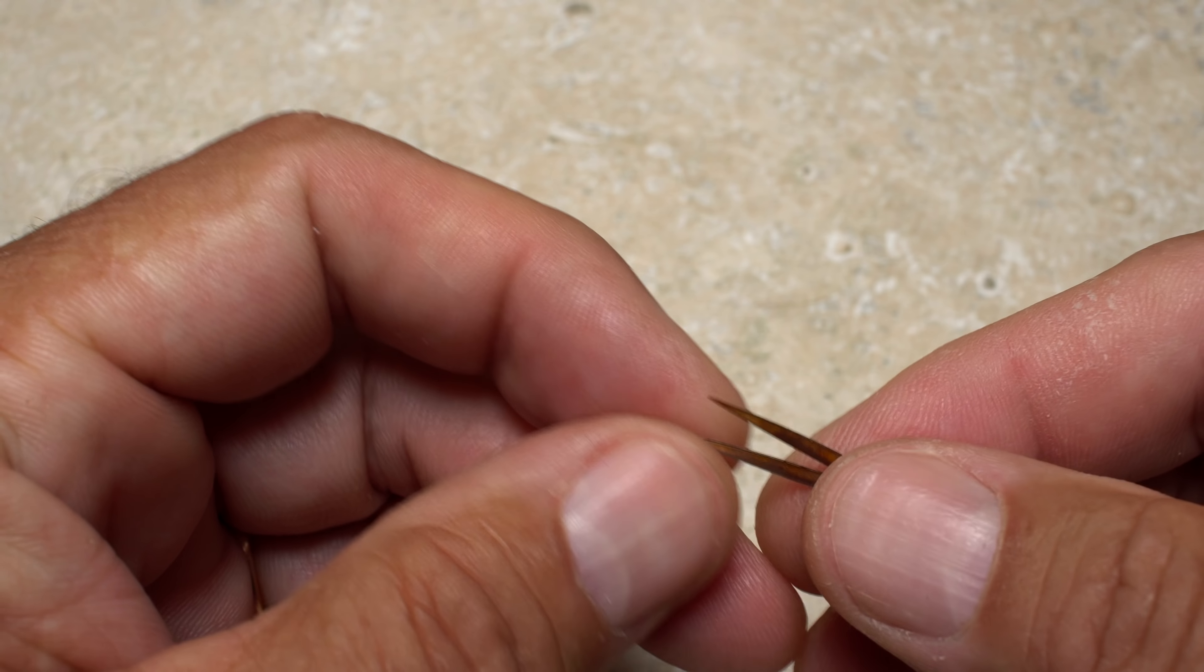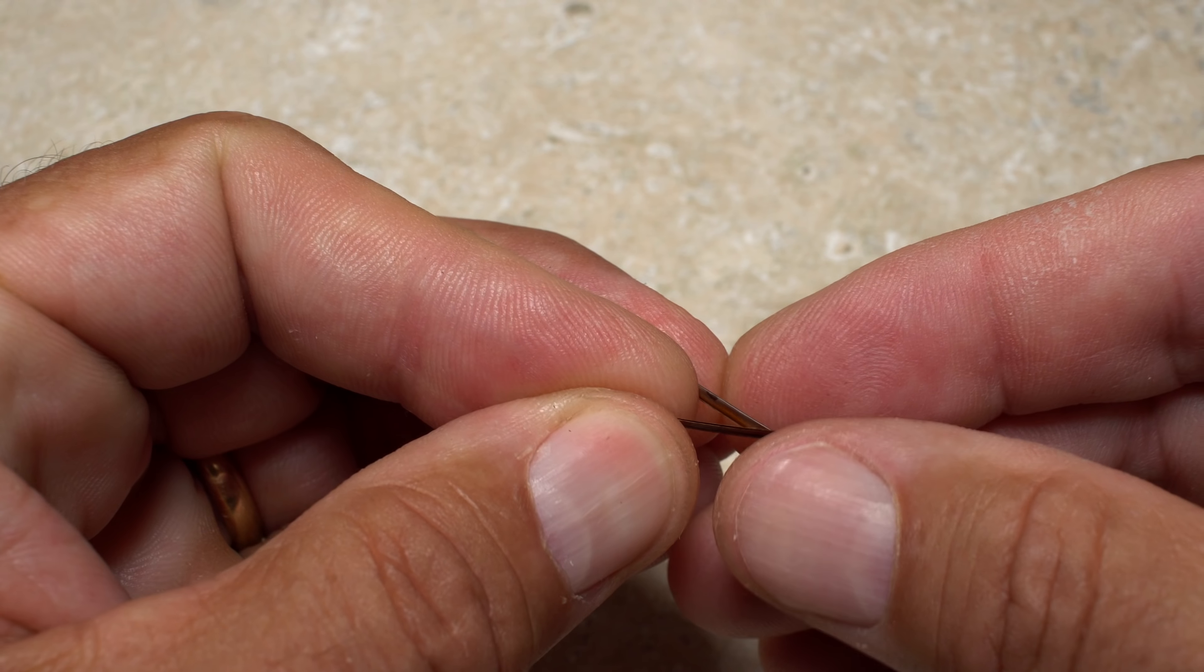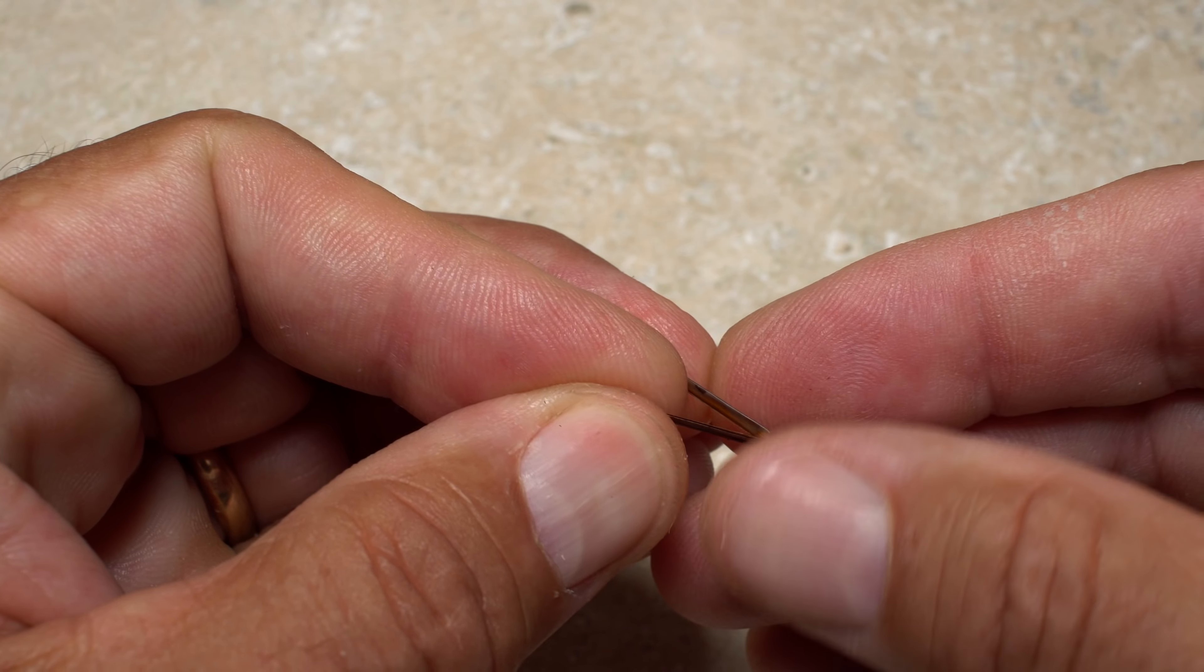Prepping and tying in biot tails on flies like a Prince Nymph can be frustrating, mainly because biots are slippery and difficult to correctly orient during tie-in. Here's a little trick to make the whole process much easier.